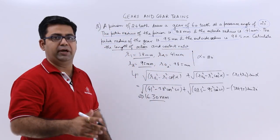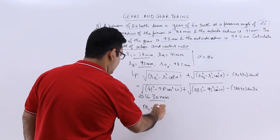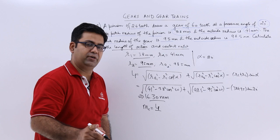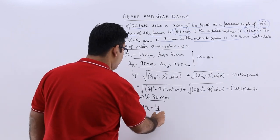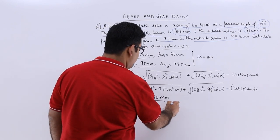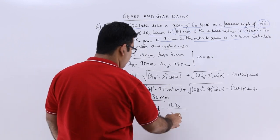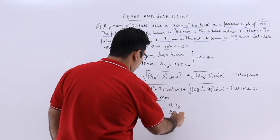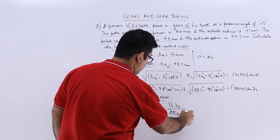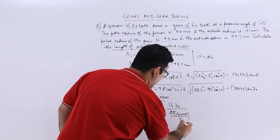The second part is to calculate the contact ratio. The contact ratio MC is the length of path of contact LP upon the base pitch. So this is 16.30 divided by 2π R1 cos alpha by Z1.